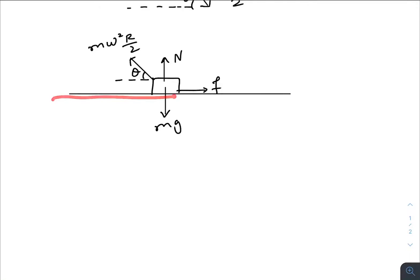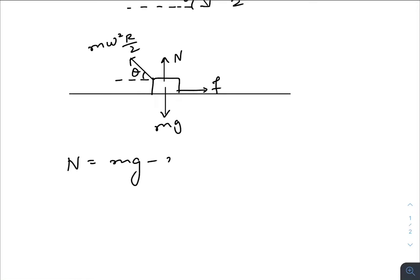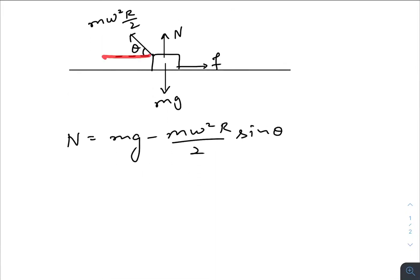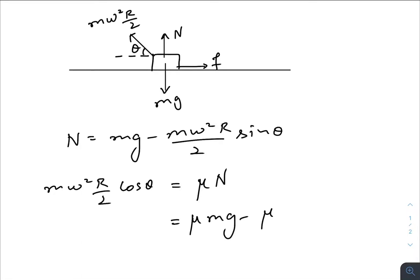With respect to the plank, I have drawn the free body diagram. The normal will be: N = mg − mω²(r/2)sinθ. And the cosine component of the pseudo force must overcome the maximum friction, so mω²(r/2)cosθ must overcome μN, giving: mω²(r/2)cosθ = μ(mg − mω²(r/2)sinθ).